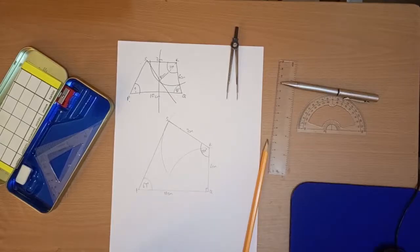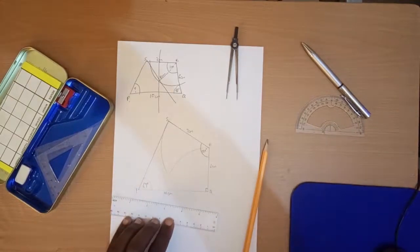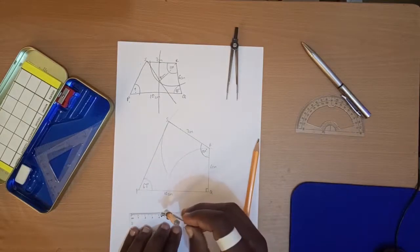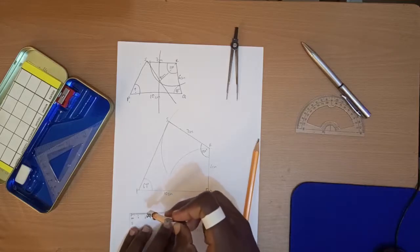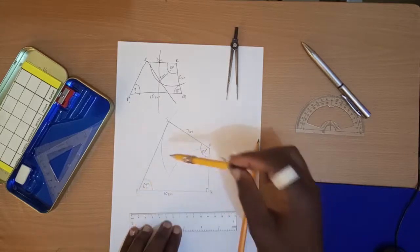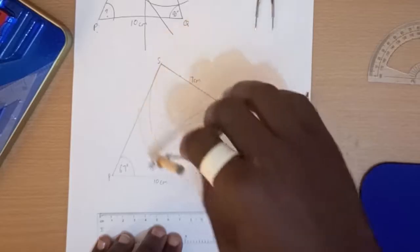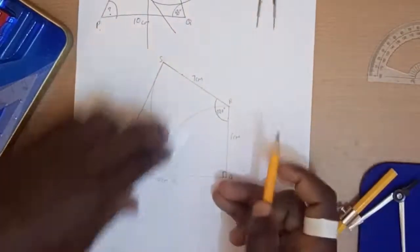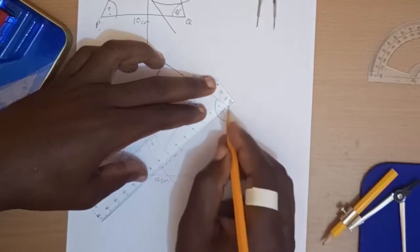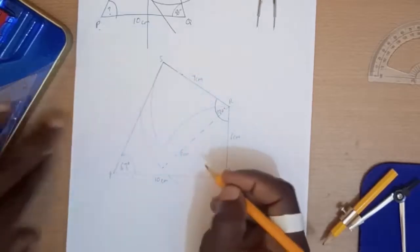Okay, so the first question is 8 centimeters from R. Let's measure our 8 centimeters. Stand on R. That's 8 centimeters from R.